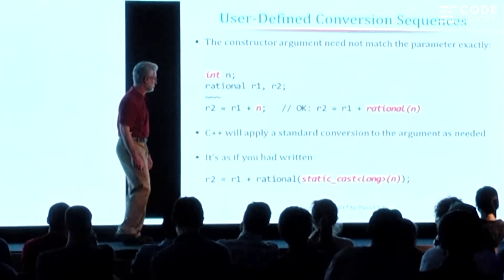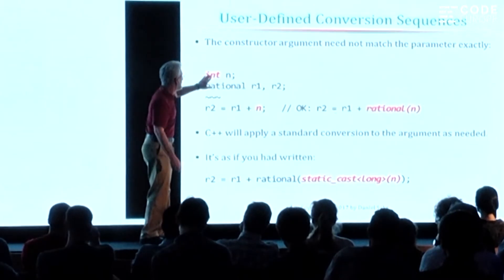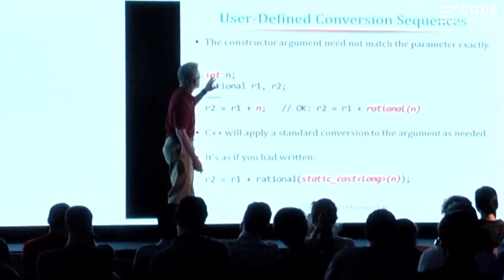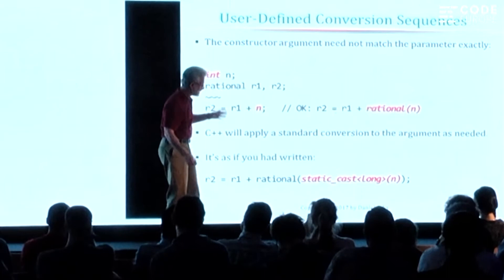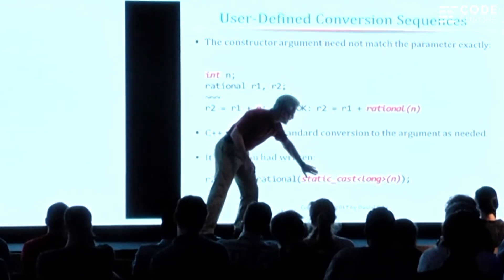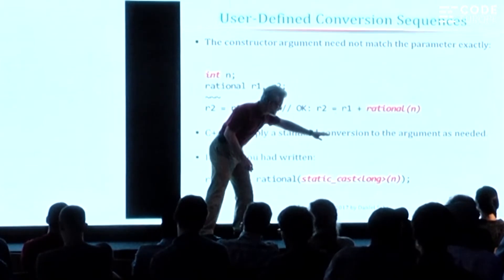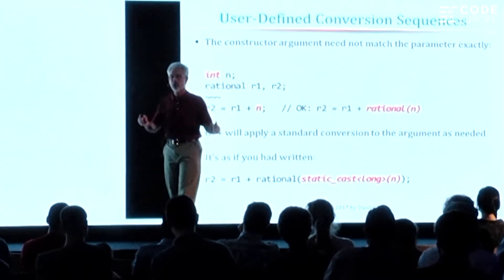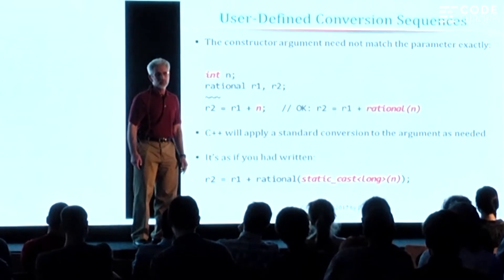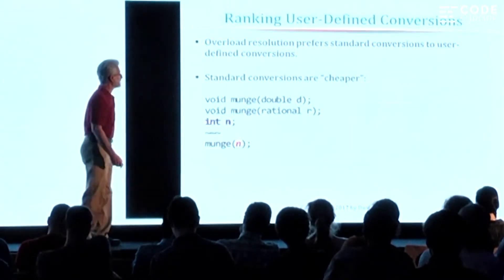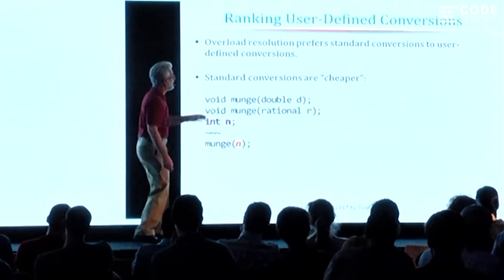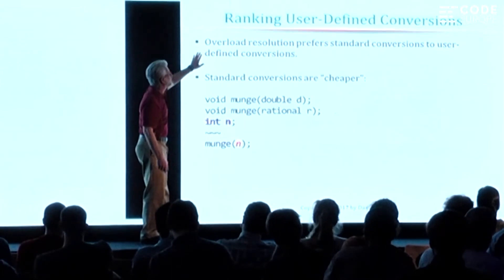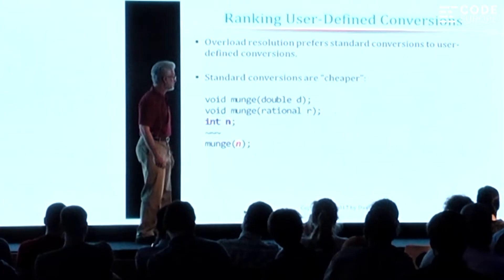Now what happens if we change this type to int instead of long? The constructor for rational was expecting a long, and we gave it an int. The compiler says that's not a problem: I'll first convert the integer into a long and then pass the long as the argument to the constructor. The compiler will chain more than one conversion together in order to make this work — it's what's known as a conversion sequence. User-defined conversions are more expensive than built-in standard conversions. So if you have two overloaded functions, one taking a double and one taking a rational, the conversion of int to double is cheaper than int to rational.